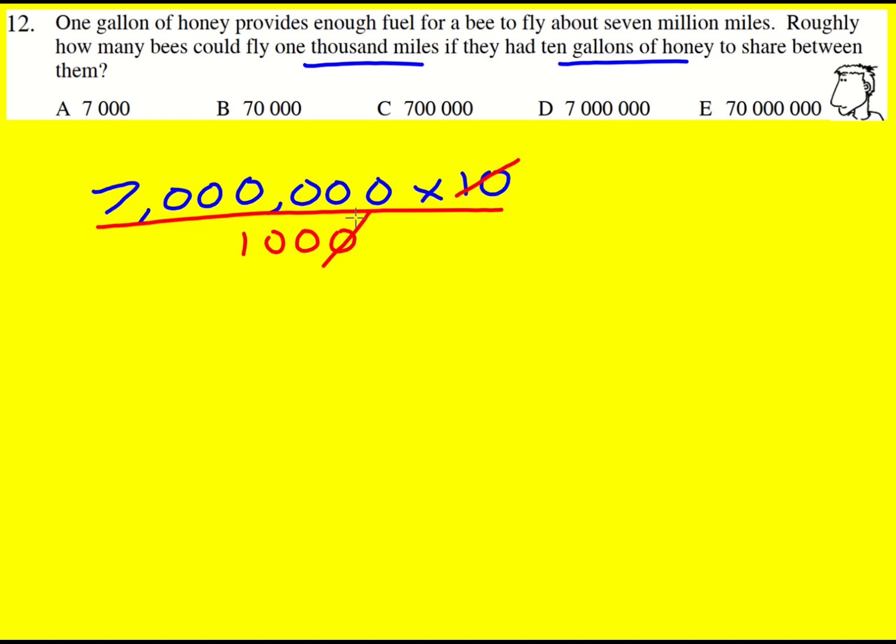And I can cancel down so that 10 cancels with that zero, they cancel, they cancel. I've basically just divided through by a thousand, leaving me overall 70,000 bees.